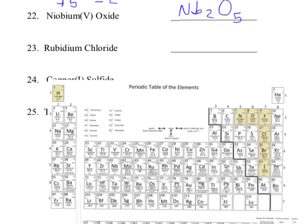Rubidium chloride: rubidium is a plus 1 and chloride is minus 1. These are great — it's just RbCl.